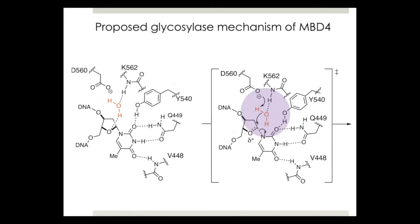Based on this structure, we proposed the glycosylase mechanism of MBD4. In our mechanism, it involves a catalytic water molecule. The water molecule hydrogen bonds with O4-prime of substrate thymine and also the backbone amide of MBD4. This water is activated by the catalytic carboxylate and attacks the C1-prime position to cleave this bond. The leaving group ability of substrate thymine is increased by multiple hydrogen bonds.